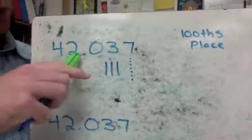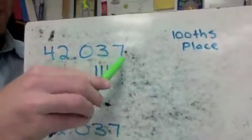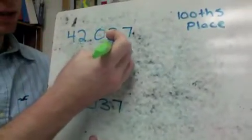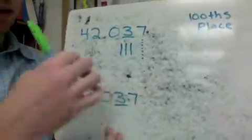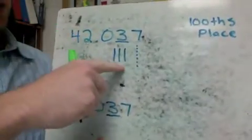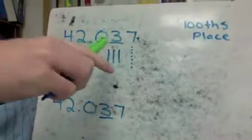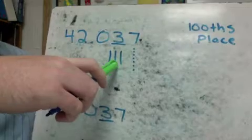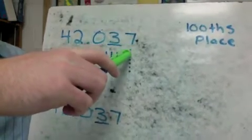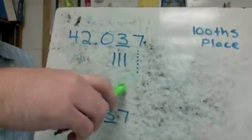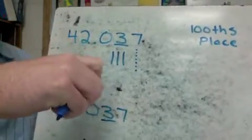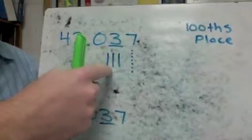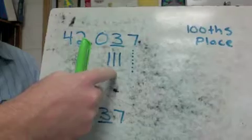We are going to take 42 and 37 thousandths and round it to the hundredths place. I'm going to start by underlining the hundredths place. I have 3 hundredths, which would be three of the sticks. If I look to the right, I've got 7 thousandths — seven of those little tiny pieces. Ten of these little tiny pieces would make another stick, or another hundredth.